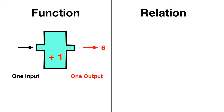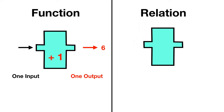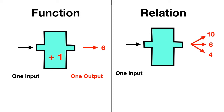This is different than relations. You can think of a relation like a similar machine, but in this machine you don't always get out the same thing. Sometimes if you put in a 5, you'll get out a 6. But other times if you put in a 5, you might get out a 4. And still other times if you put in a 5, maybe you'll get out a 10. So in a relation, for every one input, you might find yourself with many outputs. In contrast, a function must always have only one output for each one input.